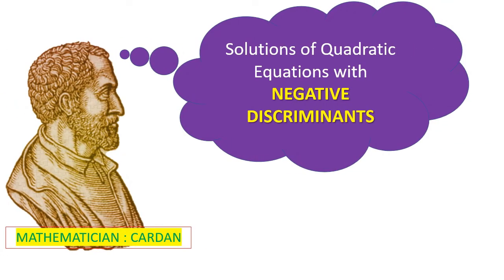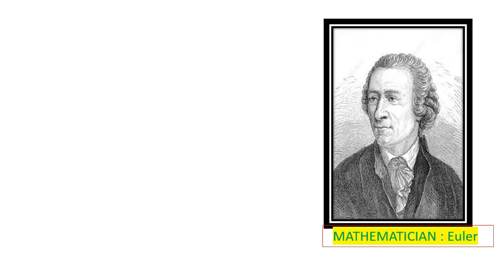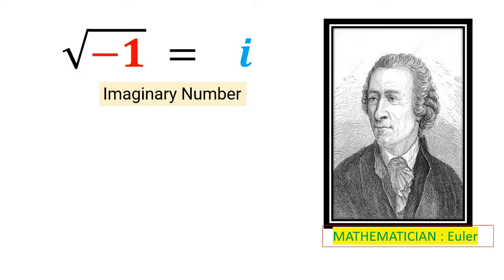However, in the 16th century, there was a mathematician named Cardan who first started thinking about solutions of quadratic equations with negative discriminants. Others started too, but it was Euler in the 18th century who gave the square root of negative 1 the symbol i and called it the imaginary number. This was termed so, as they were thought to be impossible and just something imaginary.